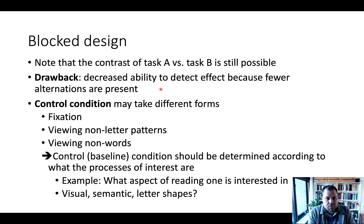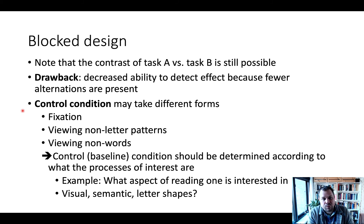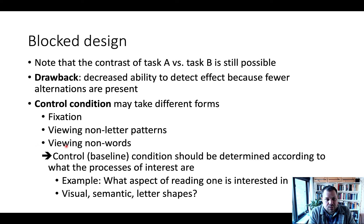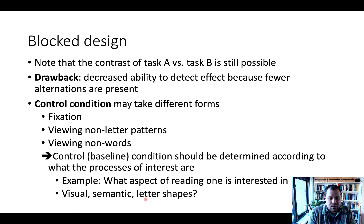The control condition can take different forms. It could be a fixation condition, or to control for visual activation patterns, you might add viewing non-letter patterns. To control for letters being on screen, you might include viewing non-words. The choice of control condition depends on what process you're most interested in — for example, whether you care about the visual, semantic, or letter-shape aspects of reading nouns versus verbs.